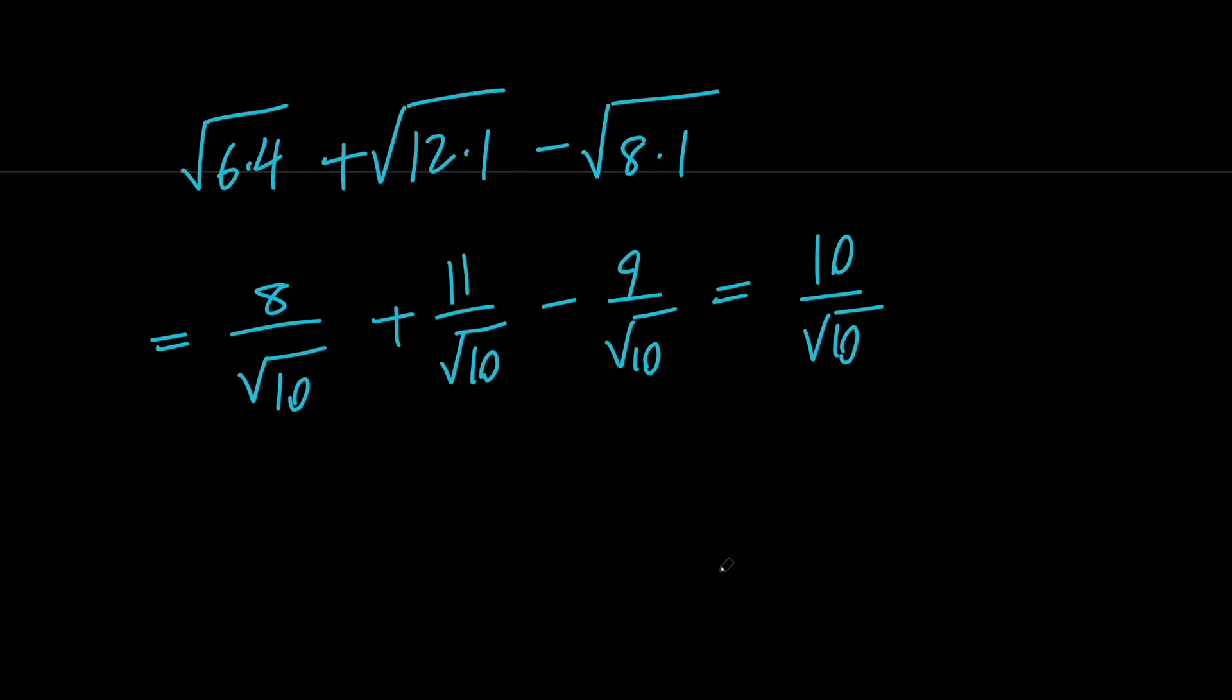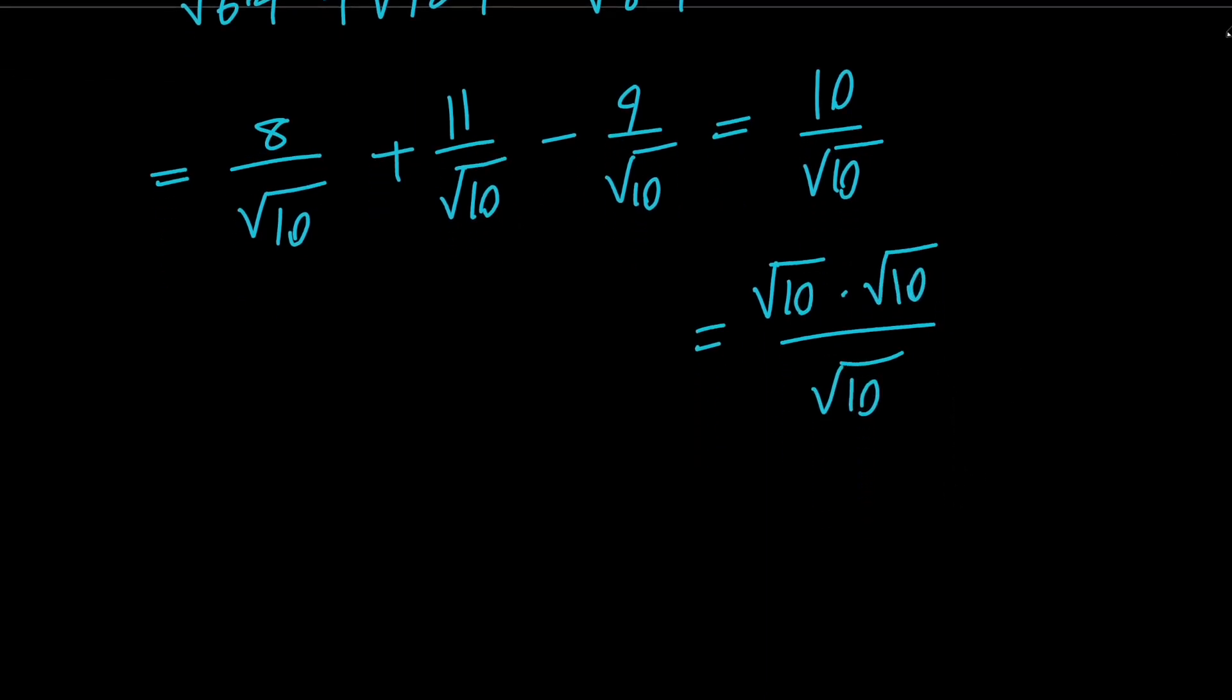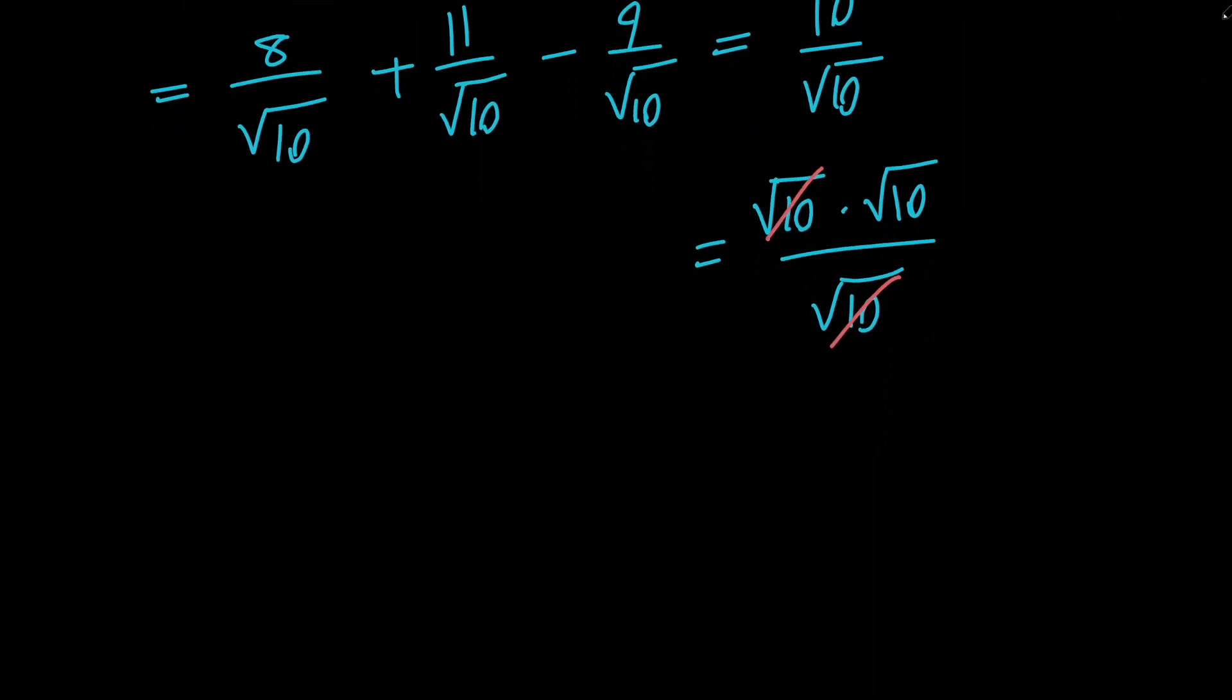But notice that 10 is the square root of 10 times the square root of 10. So we can go ahead and cancel this with this, and we get the square root of 10 as the value of our expression.